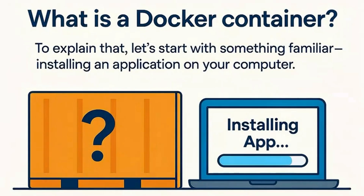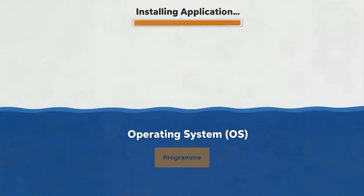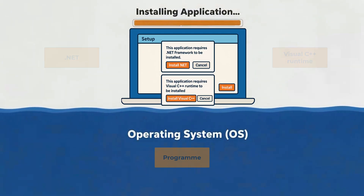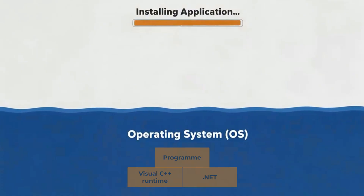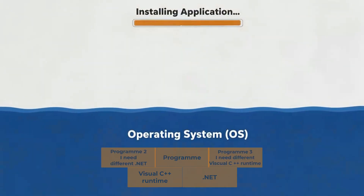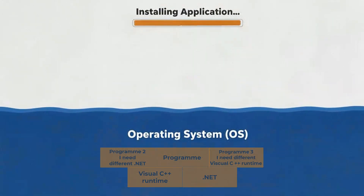To understand Docker, let's start with something familiar: installing a program directly onto your computer. Whether it's a Windows PC, a Mac, or directly onto Unraid as a plugin, the principle is the same. When you install a program this way, it gets built right into the operating system. Often the program doesn't come alone — it needs extra pieces called dependencies. If you've ever installed something on Windows and it popped up saying you need .NET or Visual C++ Runtime, that's exactly what I mean. Those dependencies also get installed into the OS, and because they're shared by all software, if two programs rely on different versions of the same dependency, you can end up with conflicts — one works and the other breaks, and sometimes the whole OS starts to behave unpredictably.